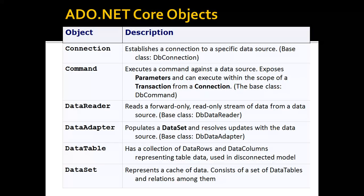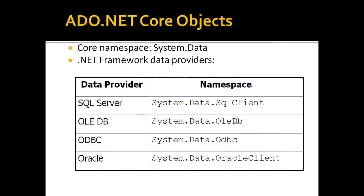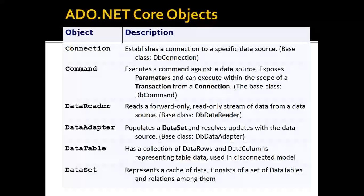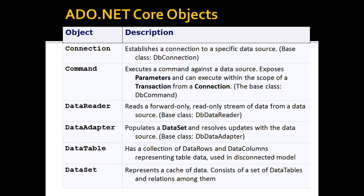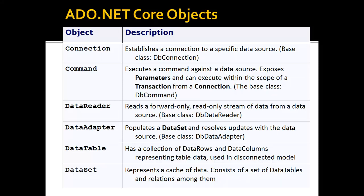Now, what are the core objects? The core objects are available across the namespaces we discussed — SQL Server, OLEDB, and others. The Connection object is used to establish a connection to a specific data source. We need to establish a connection, a port, a communication, and a handshake. After the connection is established, we can execute a command like select, insert, update, or delete. The Command object is used to fetch and execute against the data source.